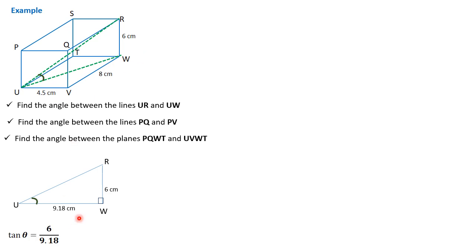We're now going to use a trigonometric ratio. Therefore, we say tan theta — that is, tan of the angle we're looking for — is opposite over adjacent, so it's 6 over 9.18. Therefore, we look for the tan inverse of that, and the angle we wanted is 33.17 degrees.